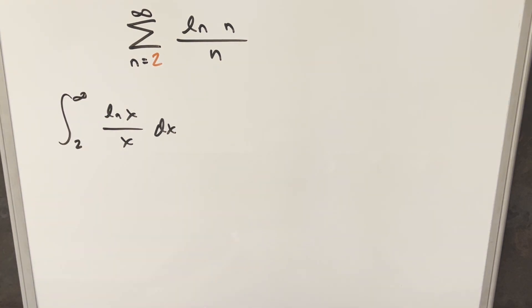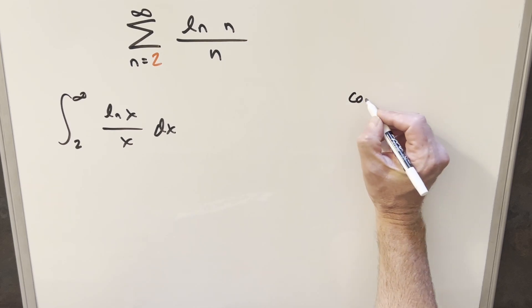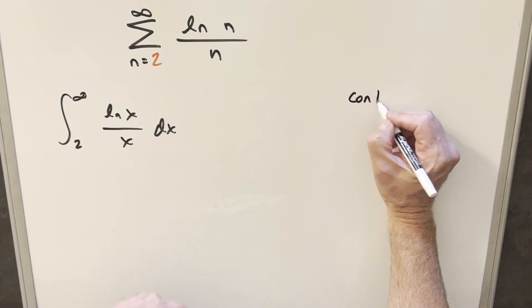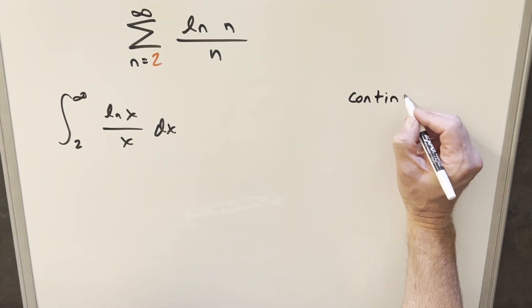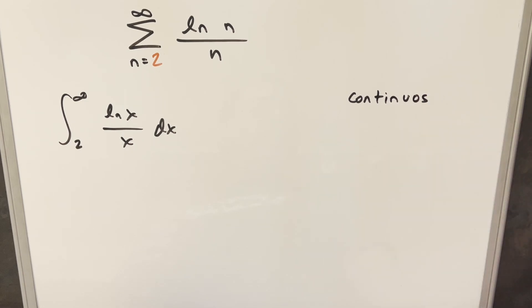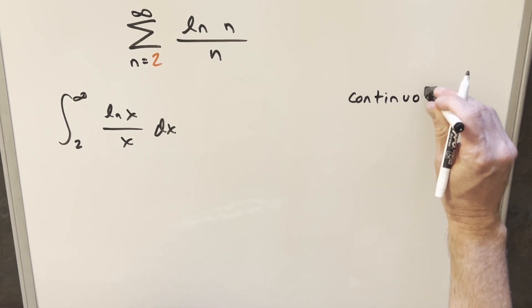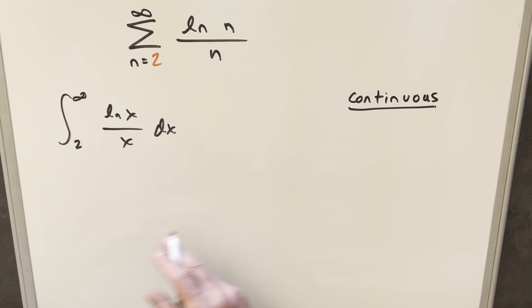But before we can do this, we have a few checks. First thing we need to know is, is this thing here going to be continuous? Let's see if I remember how to spell continuous. I think that's the right spelling. Now for the continuous part, yes, it's going to be continuous. We could look at a graph and see it.